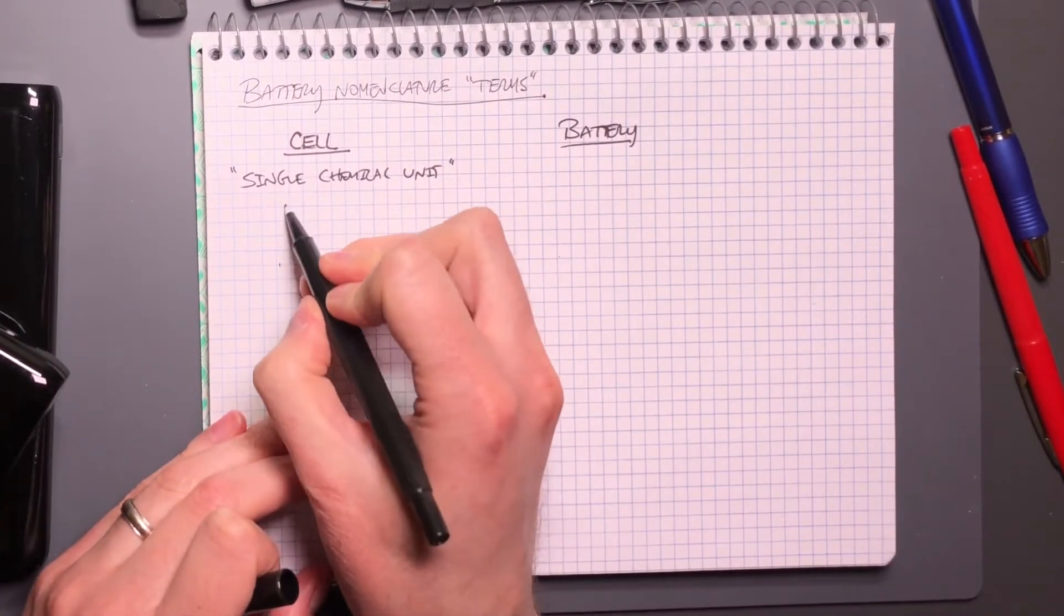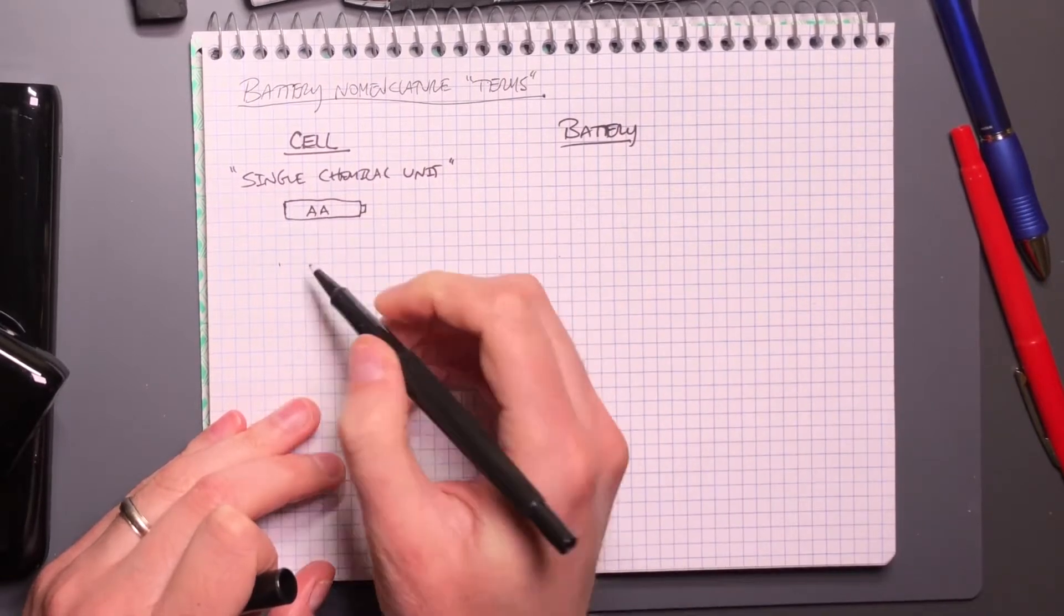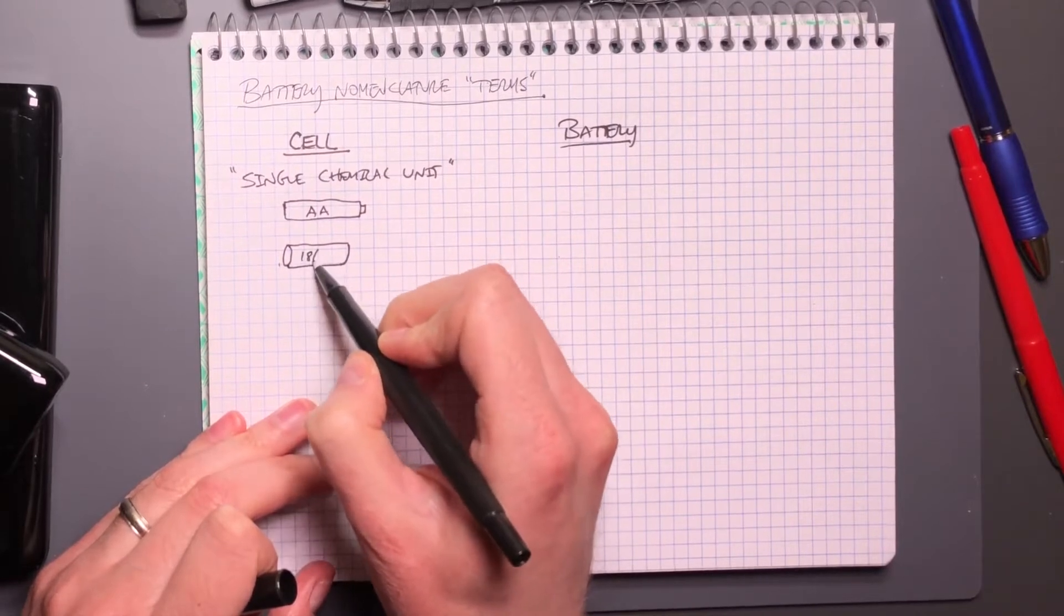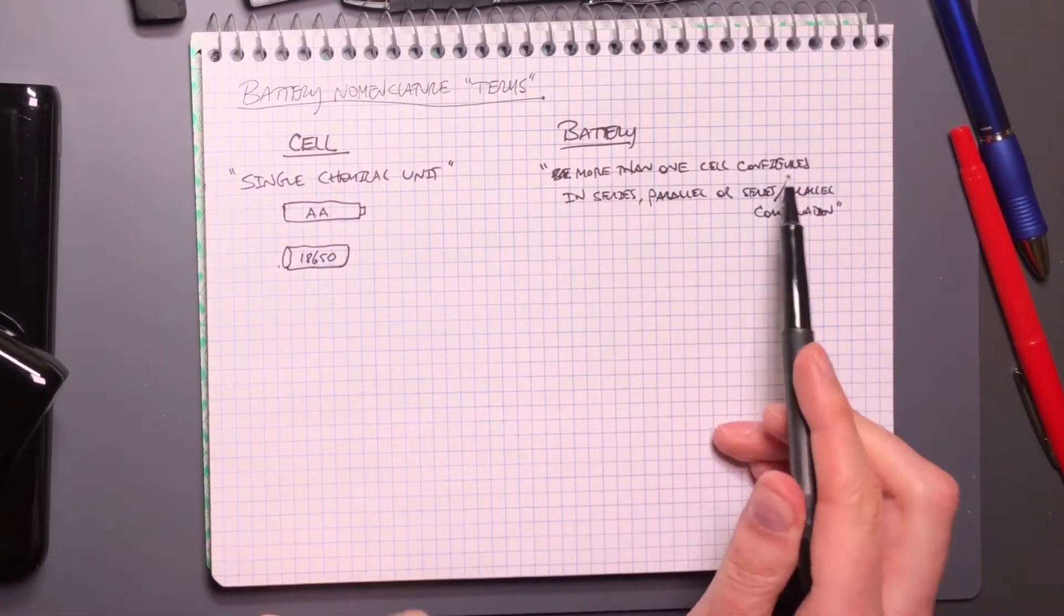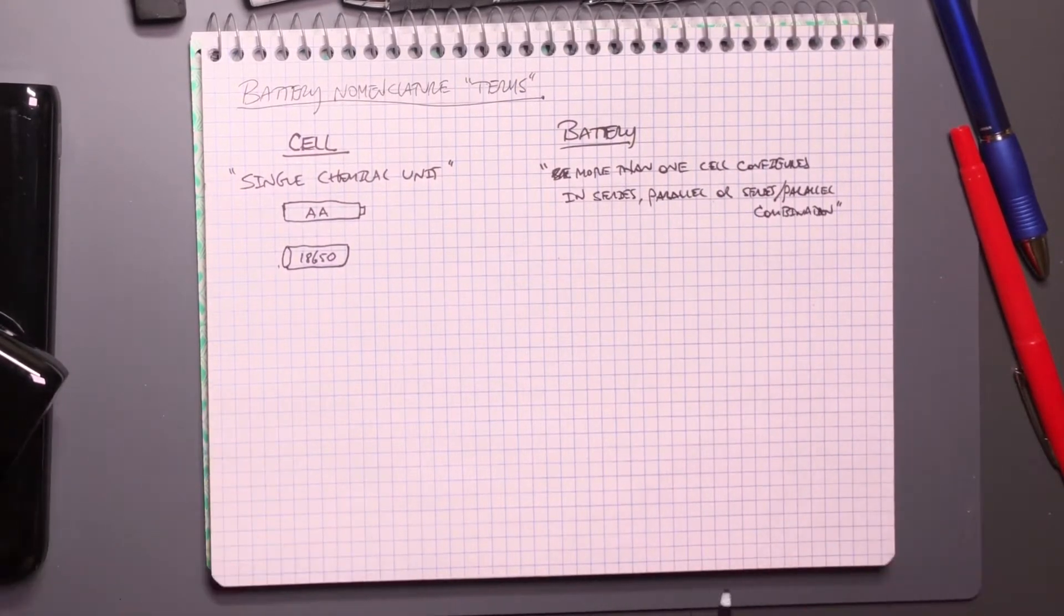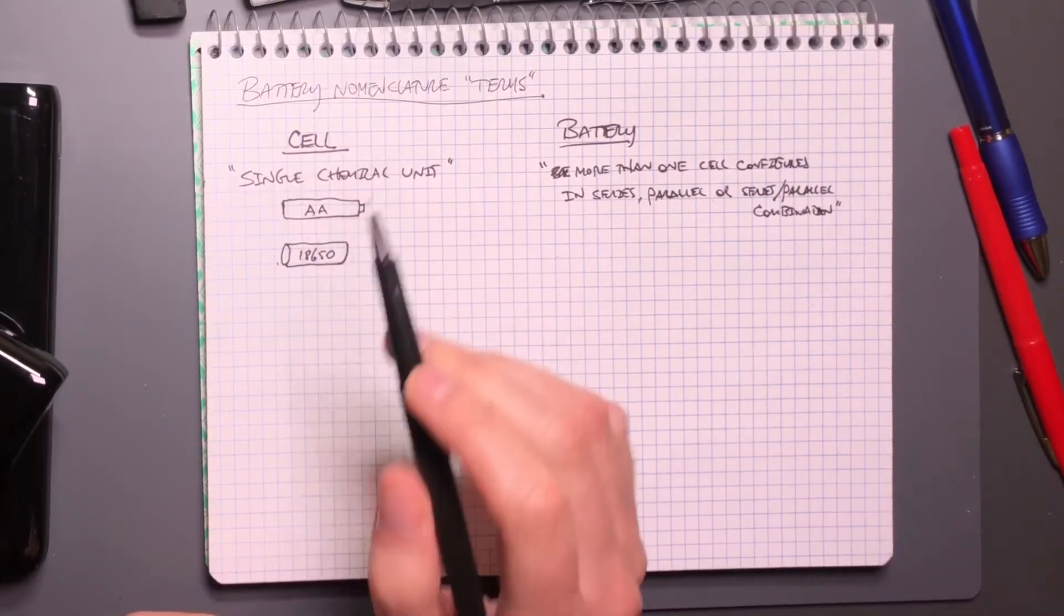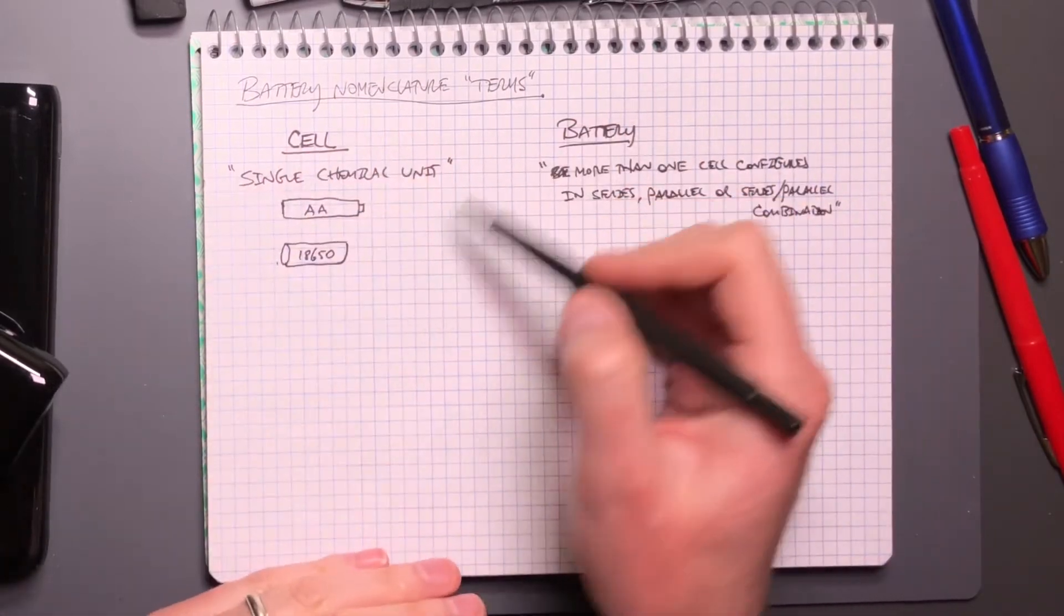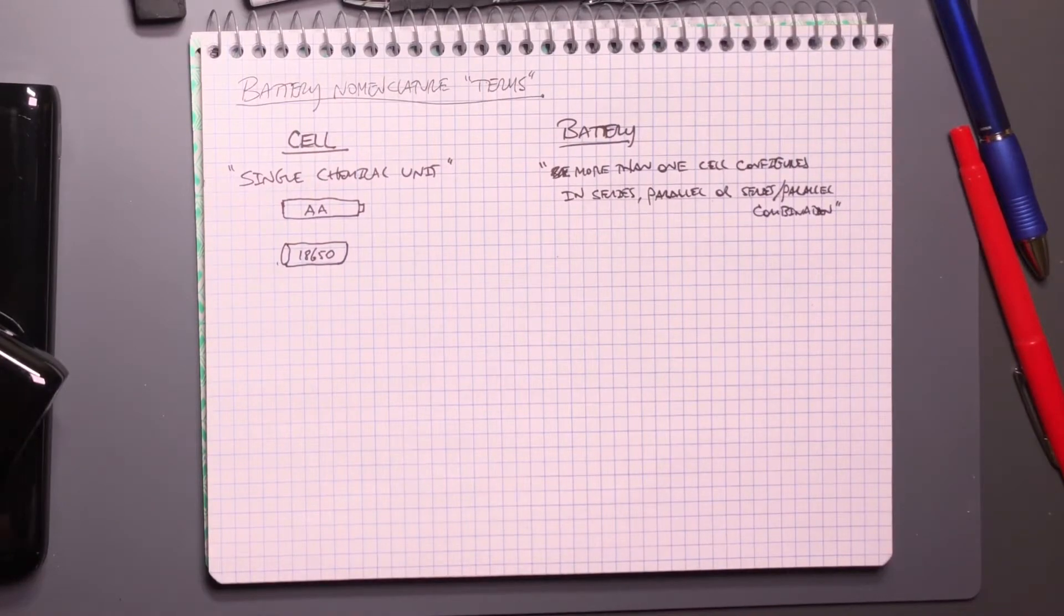So cell is, I would just say we break it into, so there's a cell, and then there's a battery. And typically this is a single chemical unit. And just think of this, I'll just draw a little AA battery and cylindrical 18650. These are my awesome drawings of 18650. And this is the battery, which is more than one cell configured in series, parallel, or a series-parallel combination. Now, do I often mistakenly call a cell a battery? Of course I do, but I just wanted to delineate between the two of these for the sake of the discussion involving battery ratings and capacities.